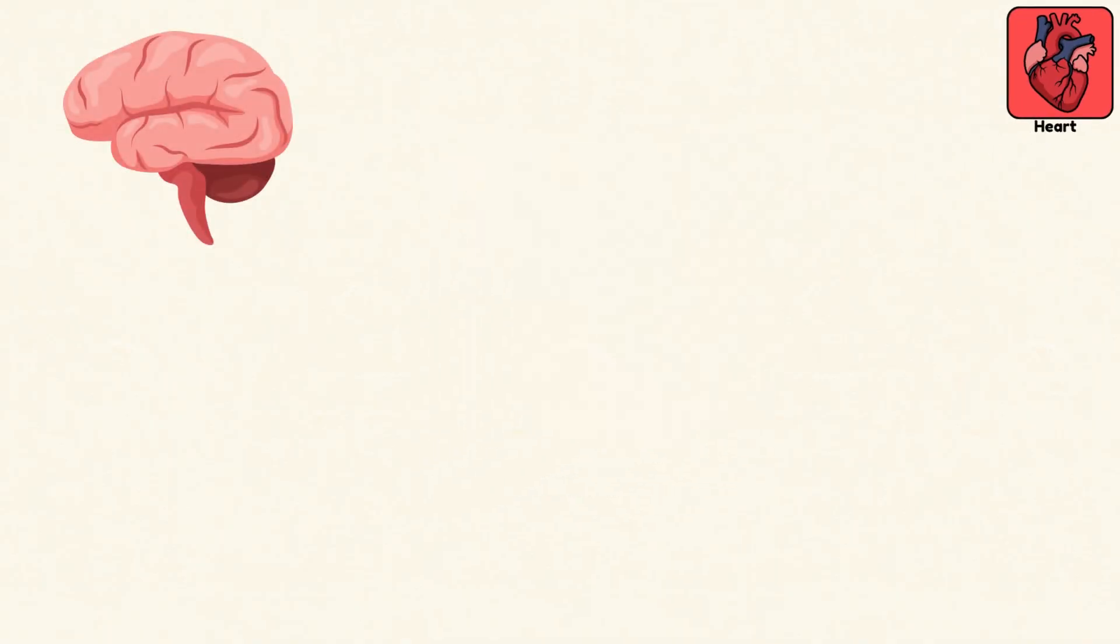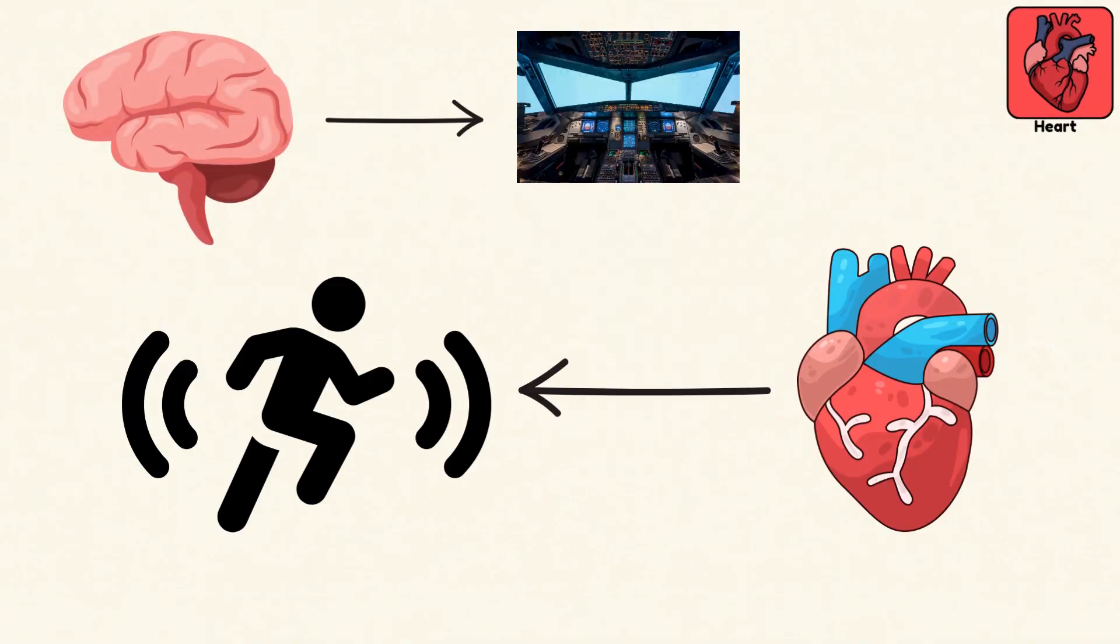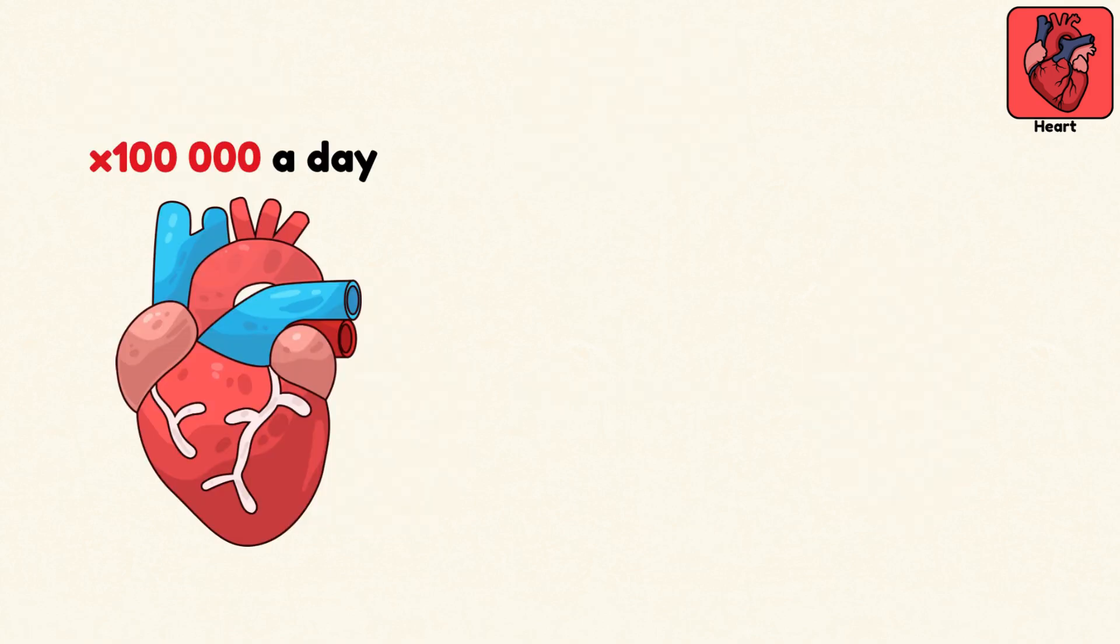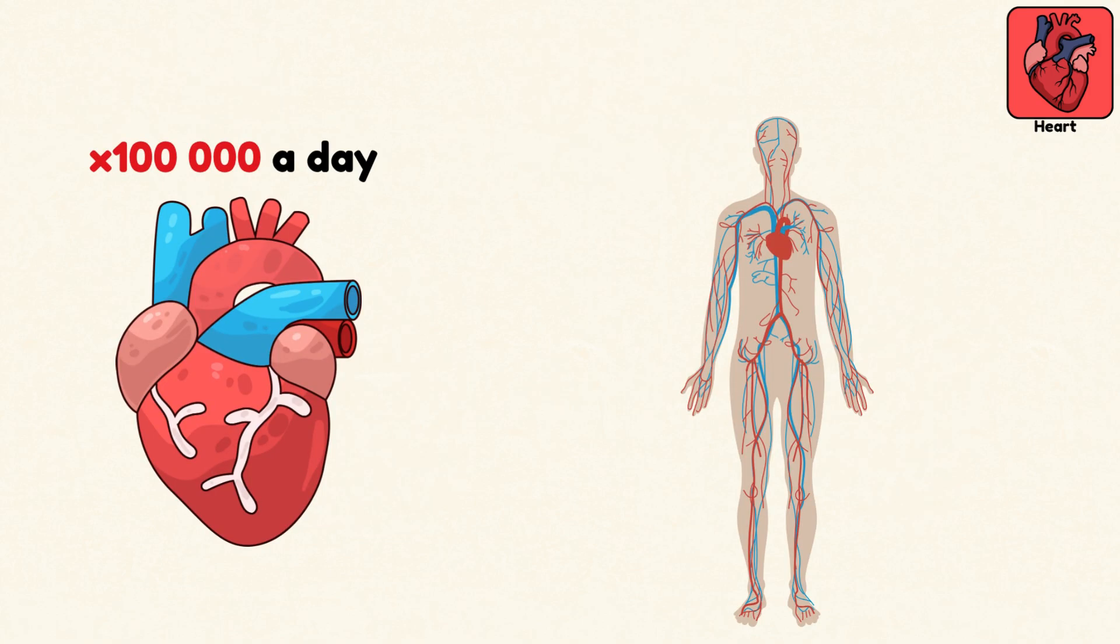Heart. If the brain is control, the heart is motion. It's your biological engine, beating over 100,000 times a day to move life through your veins.